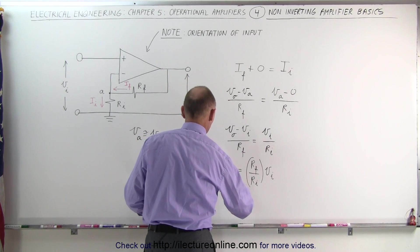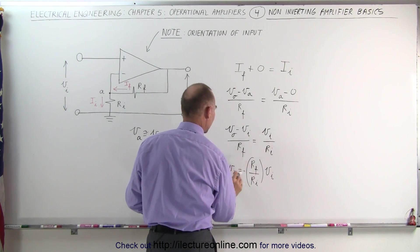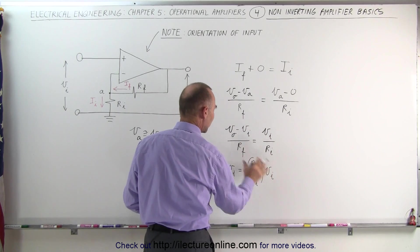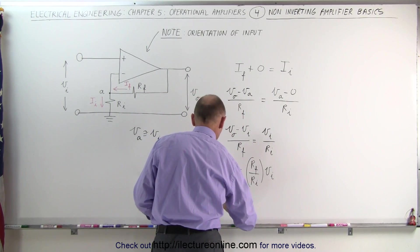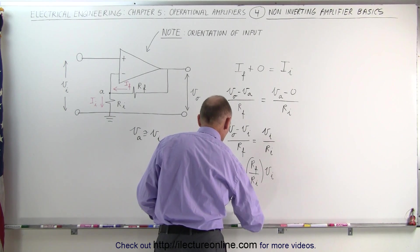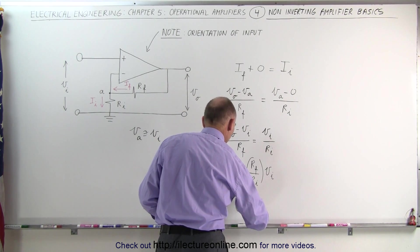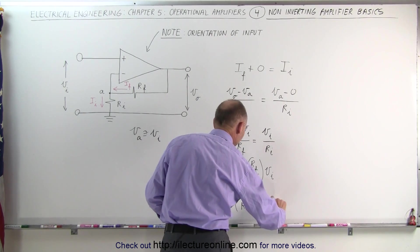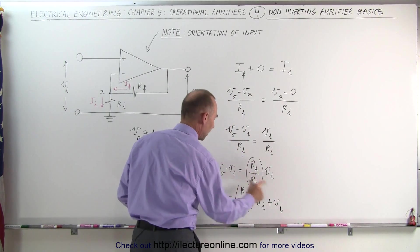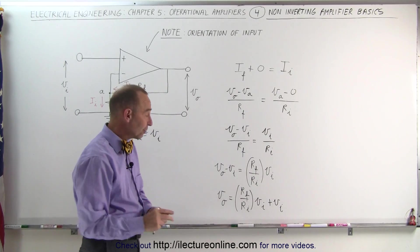So we have V sub O minus V sub I is equal to, moving the R sub F over here, we get that. Now I'll move my V sub I over here. I can then write that V sub O is equal to the gain factor R sub F divided by R sub I times V sub I plus V sub I, when I move the V sub I over here. Then I can factor out the V sub I.